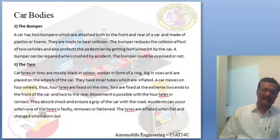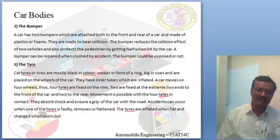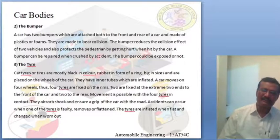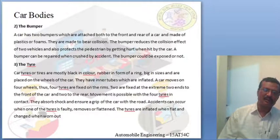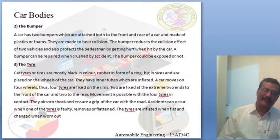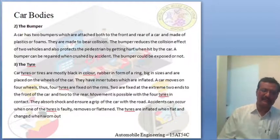A number of bumpers are used in vehicle car body construction. A car has two bumpers attached to both the front and rear of the car. They are made up of plastic or foam materials. The bumper reduces the collision effect between two vehicles and also protects the car body. Bumpers can be replaced when crushed in an accident, protecting the car body from damage.